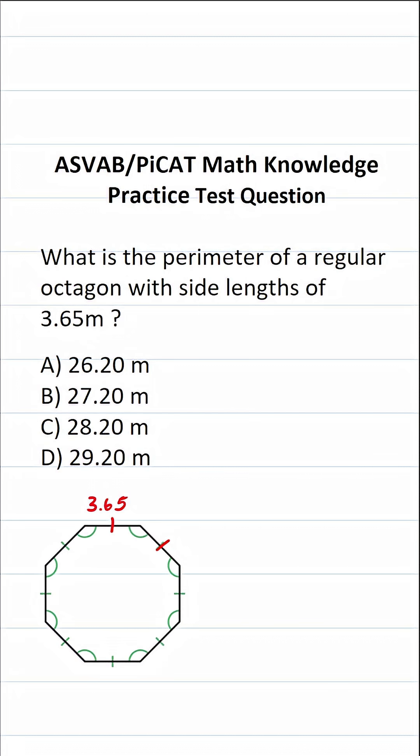In case you see a different question on the ASVAB, you have to know that a pentagon has five sides, a hexagon has six sides, a septagon has seven sides, and an octagon has eight sides.